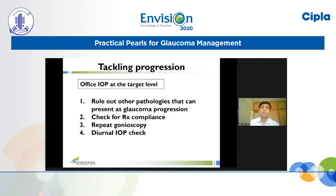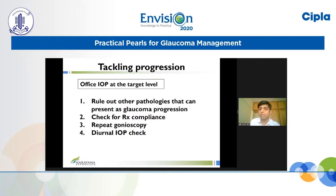If the office IOP is at the target level, first rule out other pathologies — vein occlusions, retinal scars, AMD — which can mimic glaucoma progression. Even if IOPs are at target level, check for compliance because there can be spikes in non-office hours. Repeat gonioscopy because angle-closure components can cause IOP spikes in non-office hours, and then perform diurnal IOP checks.